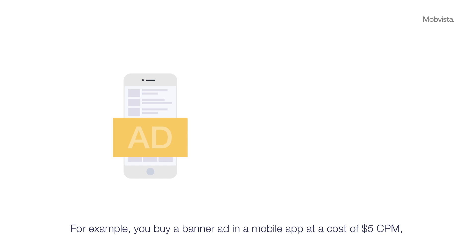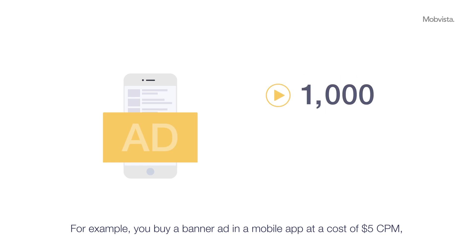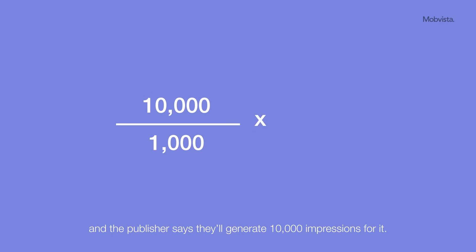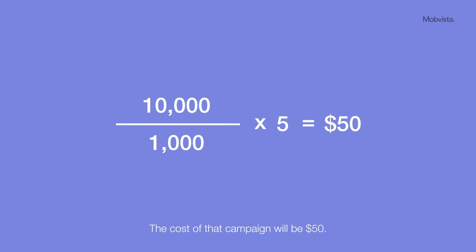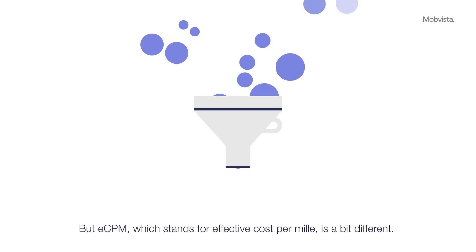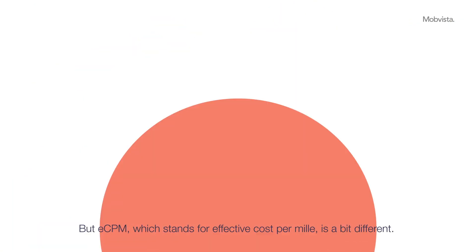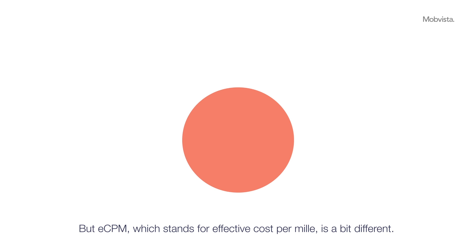For example, you buy a banner ad in a mobile app at a cost of five dollars CPM, and the publisher says they'll generate ten thousand impressions for it. The cost of that campaign will be fifty dollars. But eCPM, which stands for effective cost per mil, is a bit different.